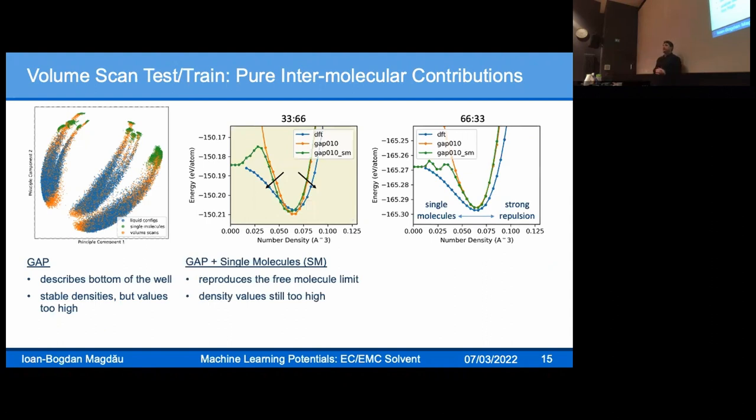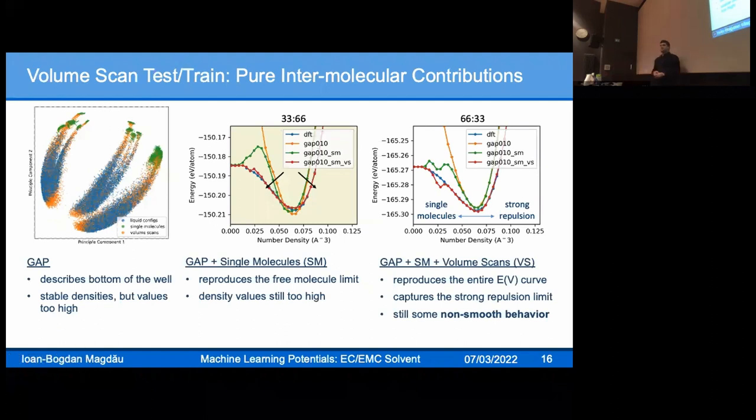How do we fix that? We can immediately add single molecules to the training set, and we now get the correct curve in the limit of free molecule. But this unphysical barrier persists, and the poor description of the repulsive regime remains. The densities remain high. Eventually we can fix this by adding some of those volume scans back into the training set. Taking those configs and folding them back in is very beneficial. Now we get both the repulsive regime quite well, and we reproduce the entire EV curve.